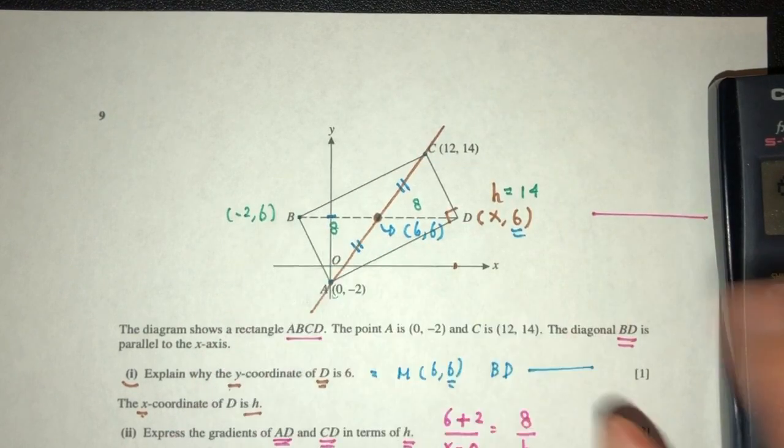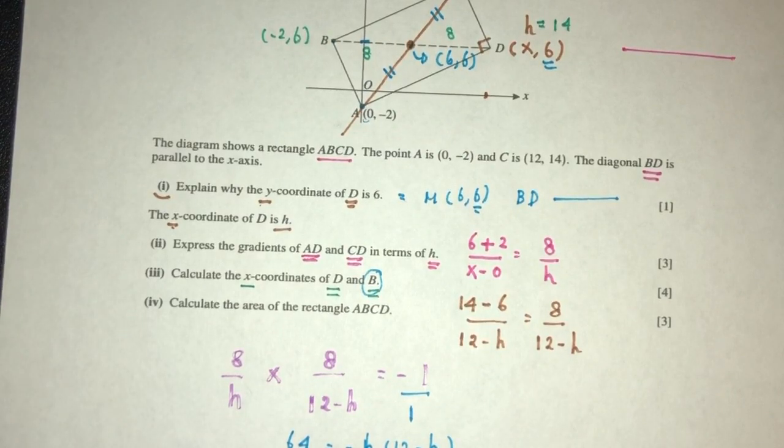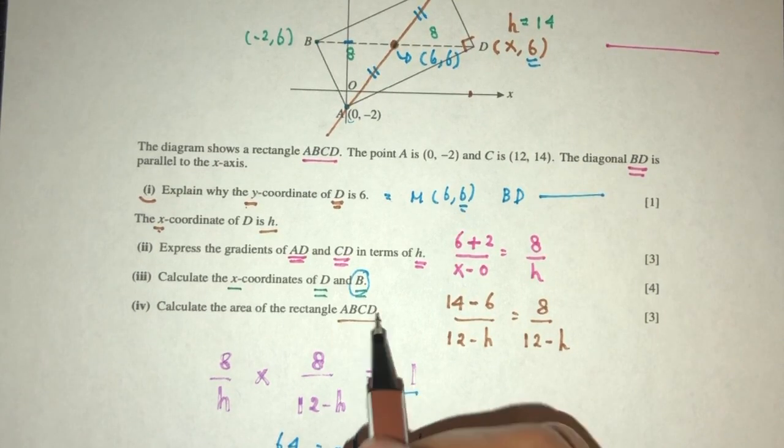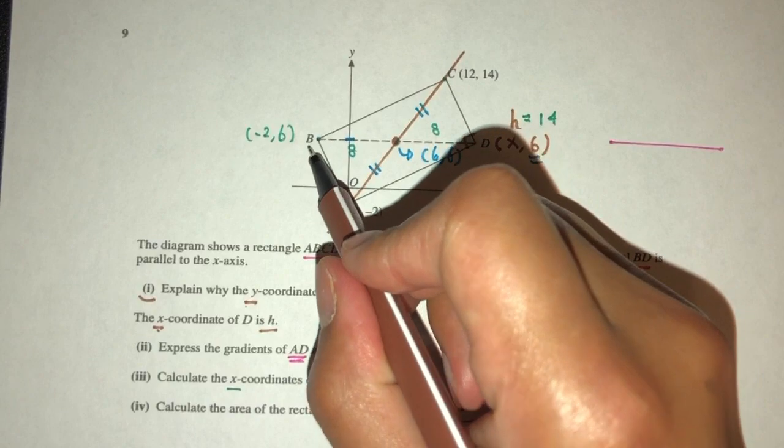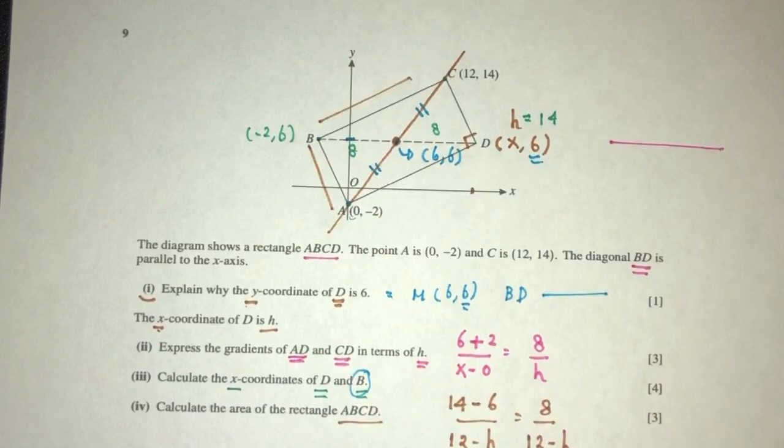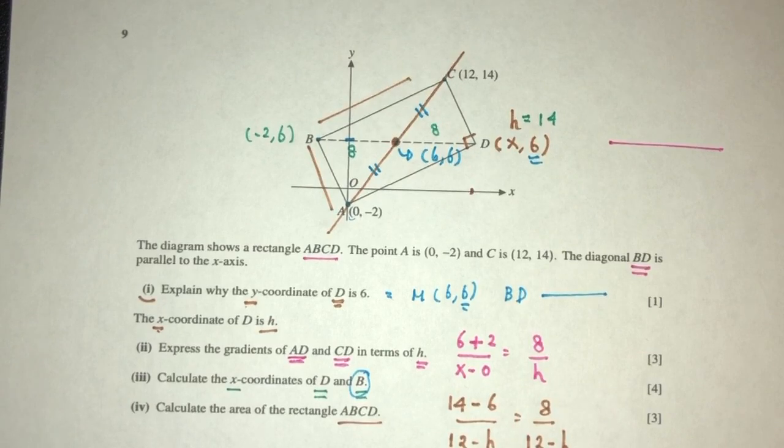Minus 2, 6. So B will be minus 2. So that's part 3. And then we have to find the area of the rectangle A, B, C, D. So how would you find the area of rectangle? It's pretty easy. It's the width times the length. So you can use that to find that value.